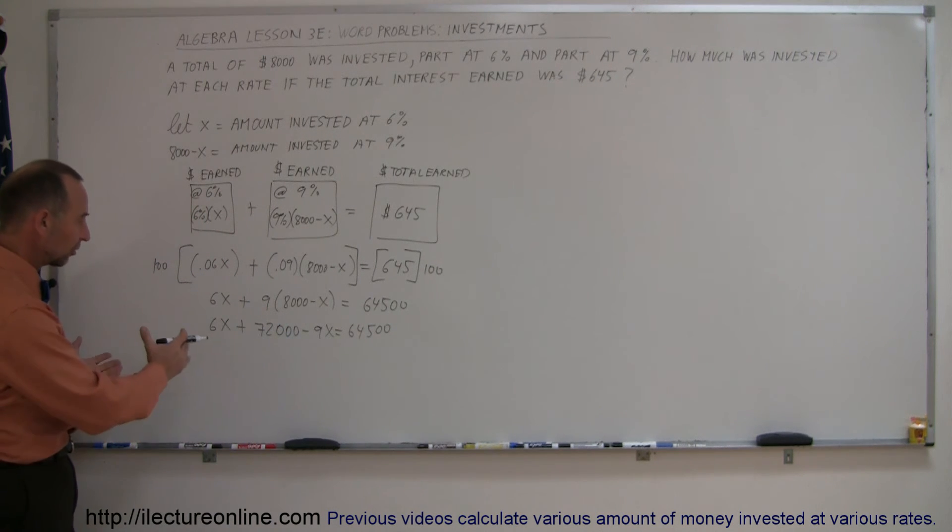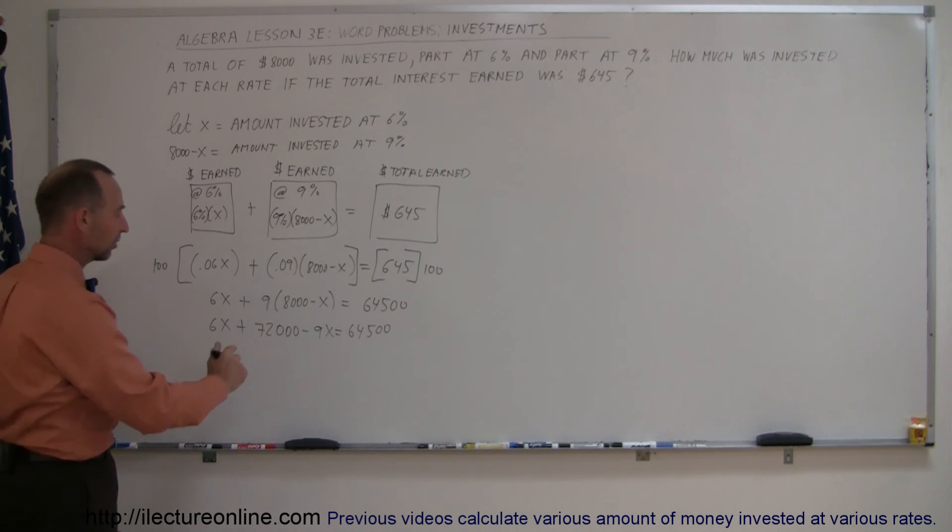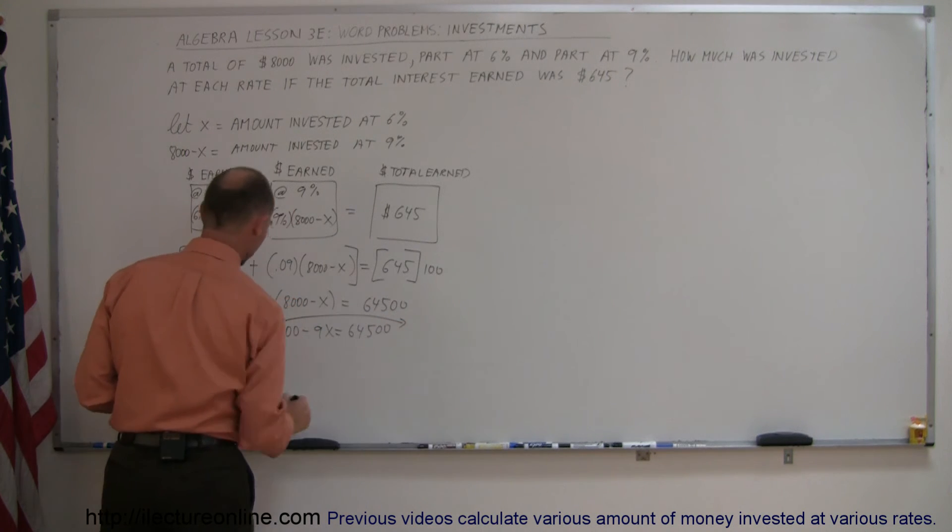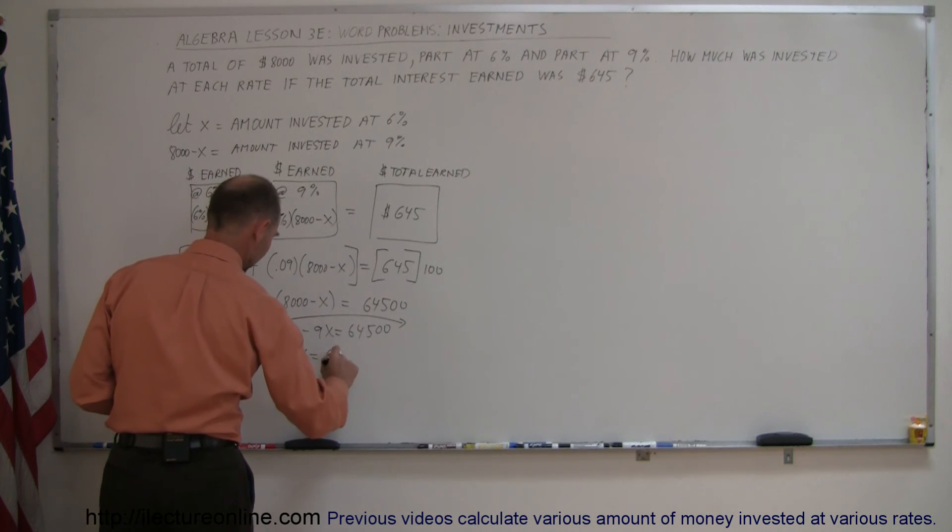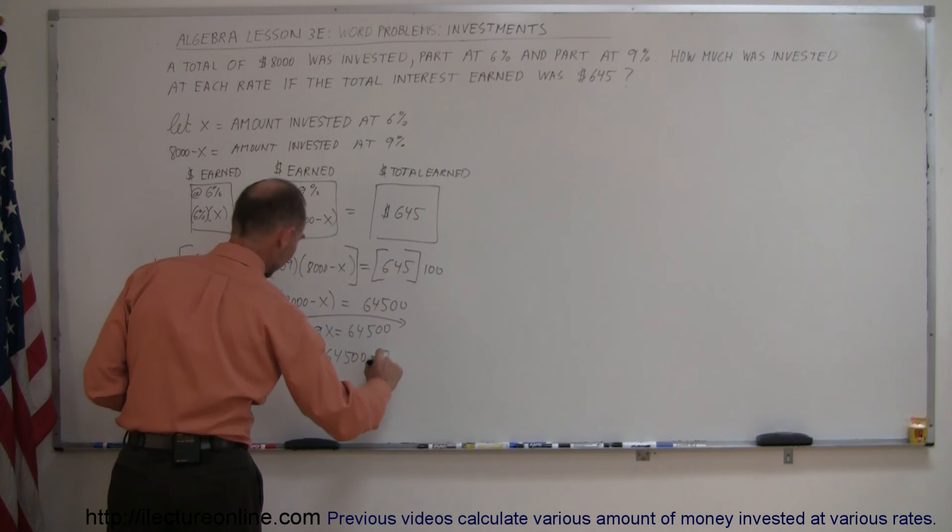Leaving all the terms with an X to the left side of the equation, moving the 72,000 to the right side of the equation, we get 6X minus 9X equals 64,500 minus 72,000.